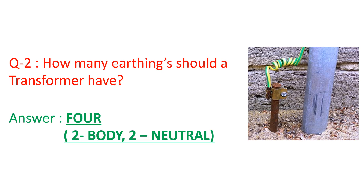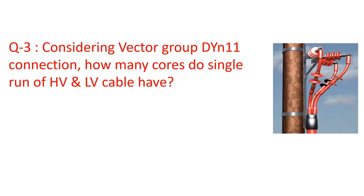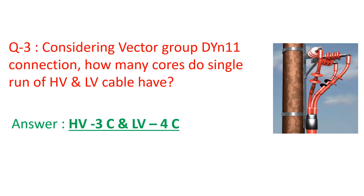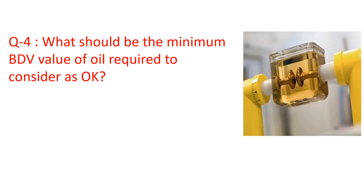Question number two: How many earth connections should a transformer have? Answer: Four — two for the body and two for neutral. This is standard as per Indian Electricity Rules. Considering vector group DYN11, how many cores does a single-run cable have? For HV it should be three-core and for LV it should be four-core. Cable core count depends on the connection, technically called vector groups.